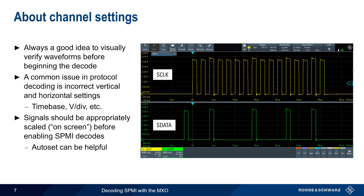Another potential issue is too small of a sample rate. A sampling rate of at least 2.5 times the DUT clock rate is the standard recommendation for serial data decoding.